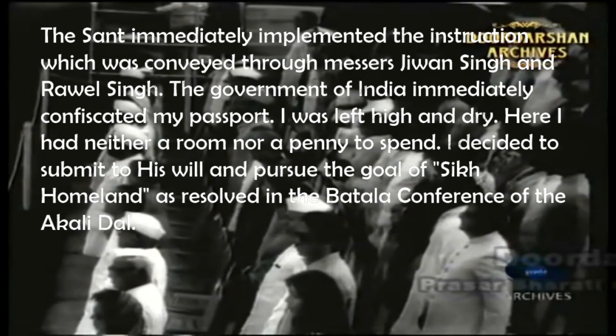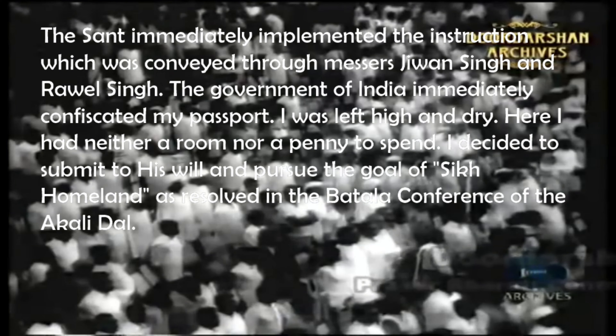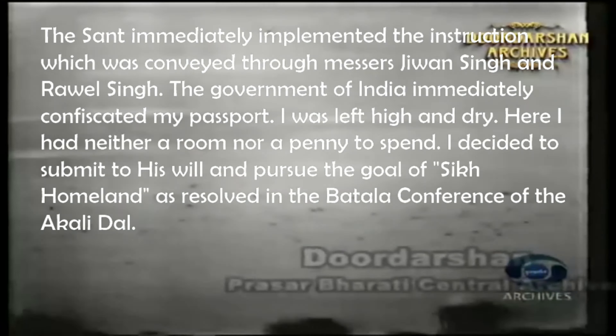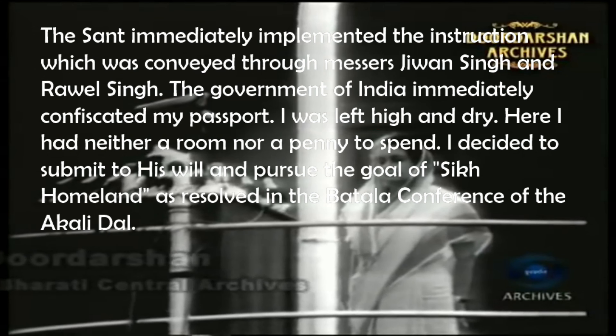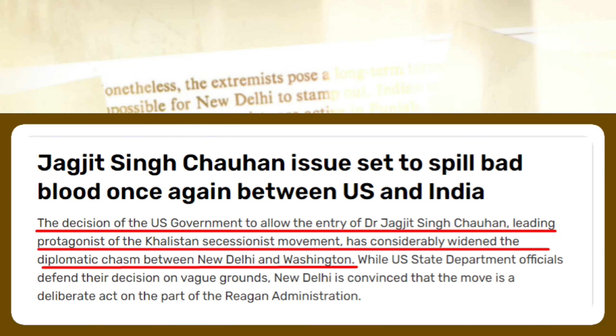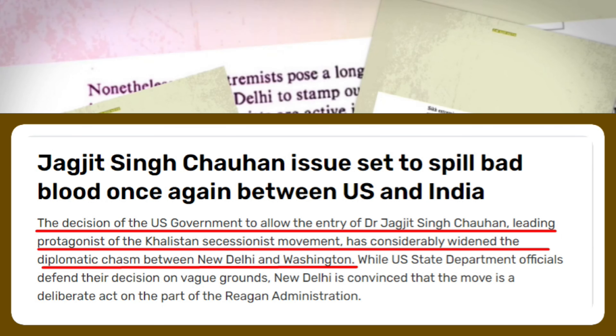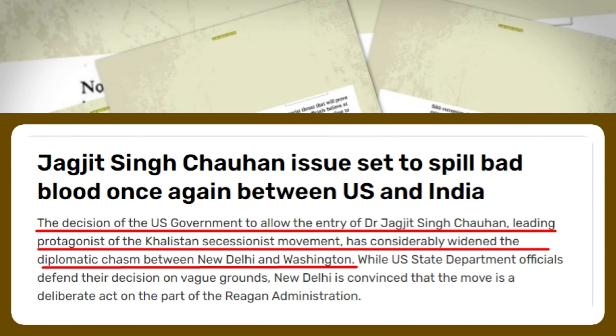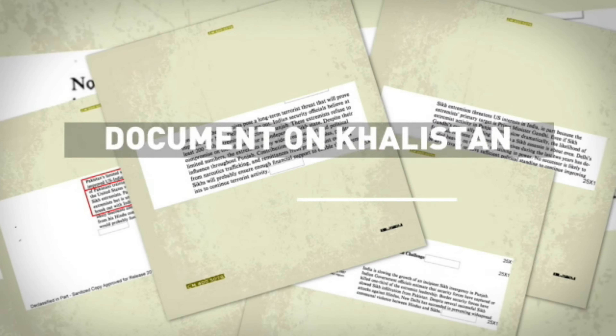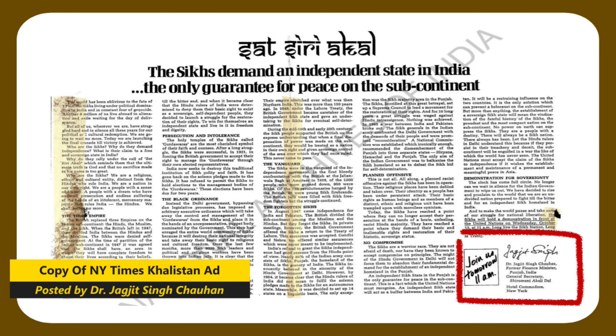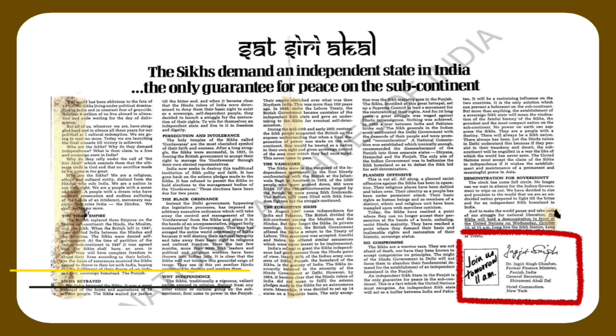Apart from ISI's involvement in Sikh separatism, a tacit approval came from the United States and its Cold War allies like Britain, in the form of visa-free entry to Dr. Jagjit Singh Chauhan in the US, even though his Indian passport was cancelled by then-Prime Minister Indira Gandhi. US-Sikh relations came under radar for the second time when Dr. Chauhan published a half-page advertisement in the New York Times on 11 October 1971, making a case for Khalistan.